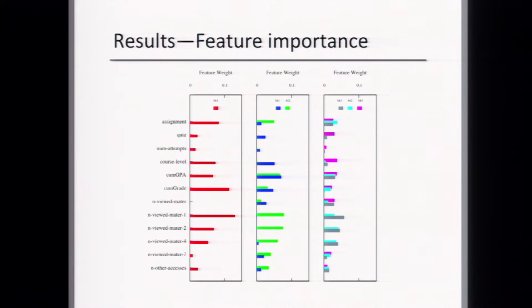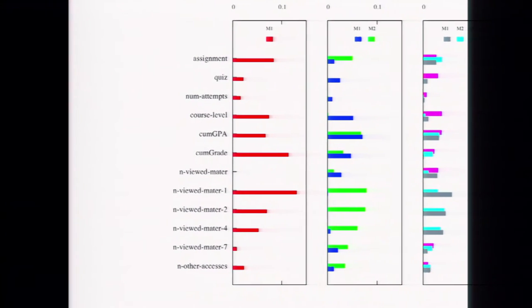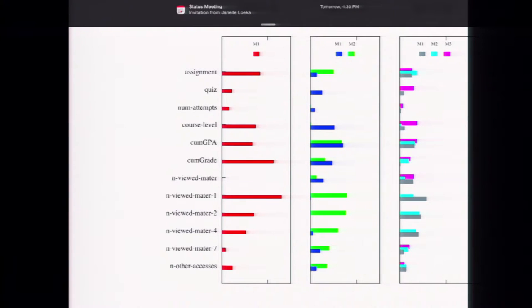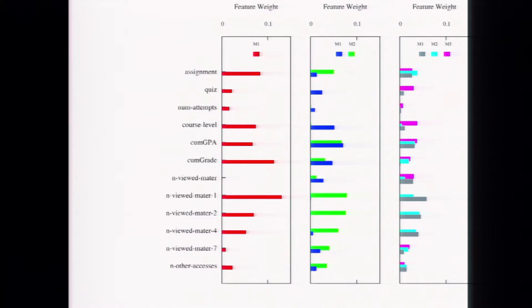We can also analyze what the models have learned. This plot shows the weight of each feature for one model, two models, and three models. In the single-model case, one of the most important features was whether the student actually viewed the material — it's very hard to submit an assignment without reviewing it. The other important feature is the student's cumulative grade so far in the class, meaning future performance correlates with past performance.